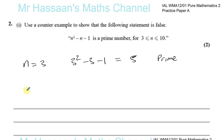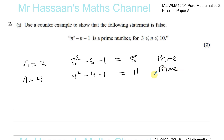So n=3 didn't prove it false. For n equals 4: 4 squared minus 4 minus 1 gives 16 minus 4, which is 12 minus 1, which is 11 — also prime. We can carry on: n=5 gives 25 minus 5 minus 1, that's 19, prime. n=6 gives 36 minus 6 minus 1, that's 29, prime. n=7 gives 49 minus 7 minus 1, that's 41, also prime.